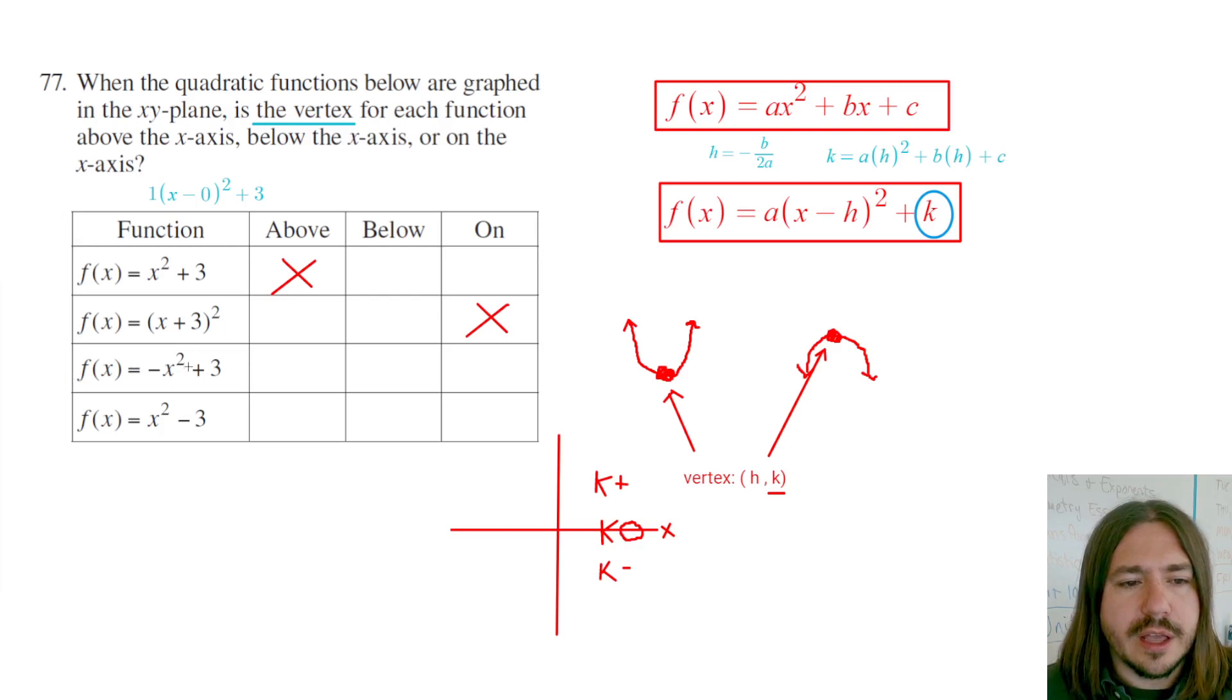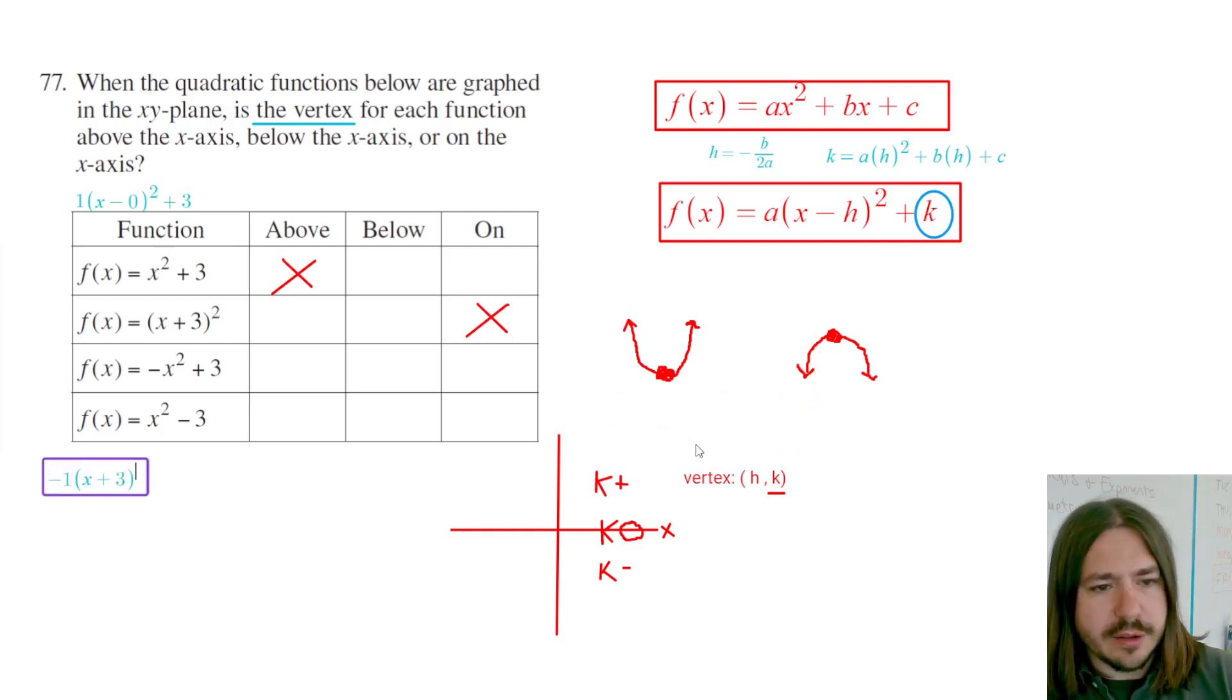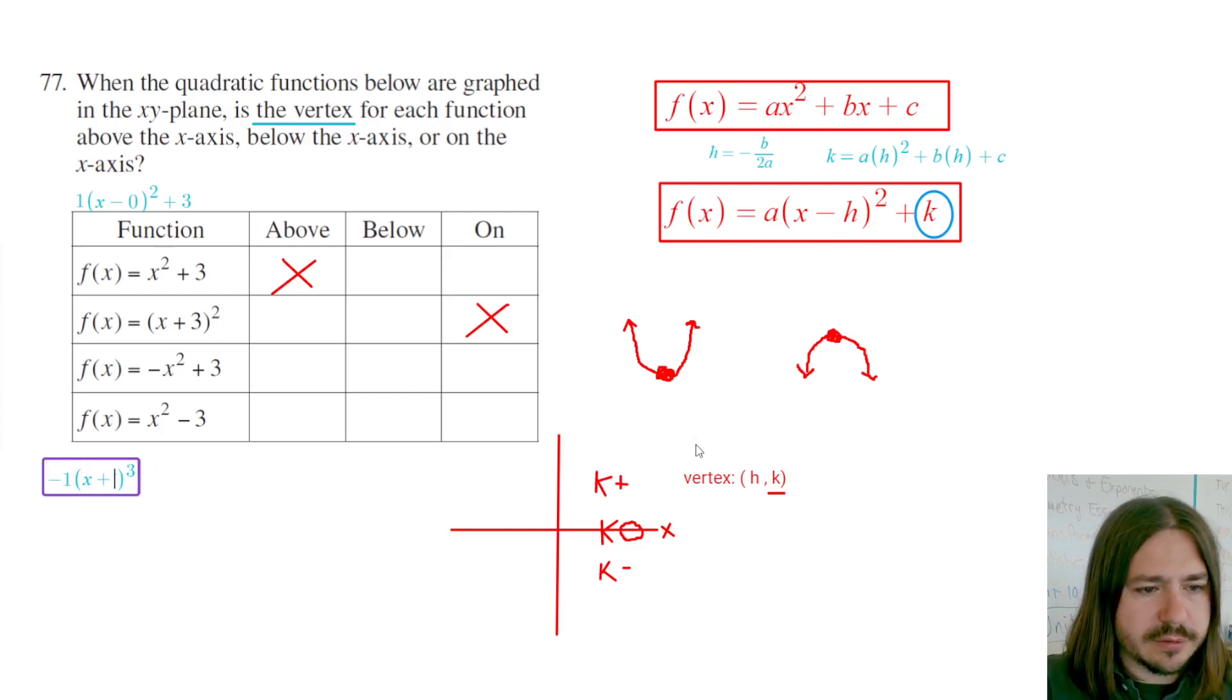For the third one, now we've got this negative. If we want to think about this as being vertex form, we can kind of rewrite it ever so slightly. I don't think we'll be able to fit that in there. Oh, that's okay. I'll just write it down here. So negative 1 times x plus 3 squared. Oh wait, I'm sorry. Negative 1 times x minus 0 squared plus 3. So we could see 3 is definitely going to be above the x-axis.